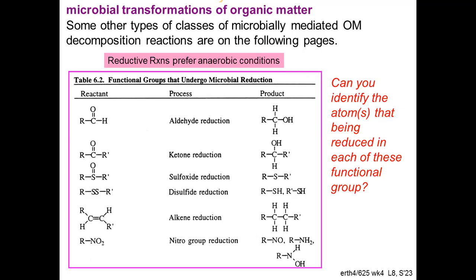Reductions occur in the absence of oxygen - anaerobic conditions. An aldehyde (RC=O) can be reduced to an alcohol (RCHOH) - the carbon gains two hydrogens, confirming reduction. Other reduction types include ketone reduction, sulfoxide reduction, and others. These types of reactions are favored in the absence of oxygen.